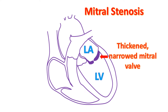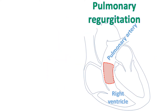Conditions like mitral stenosis — narrowing of the valve between the left upper and lower chambers of the heart — are well known to produce severe pulmonary hypertension. In the absence of increased pressure in the pulmonary artery, pulmonary regurgitation can occur due to problems of the pulmonary valve itself.